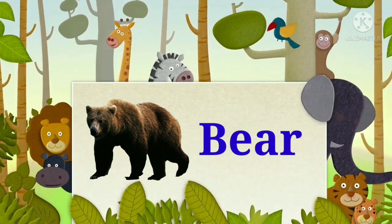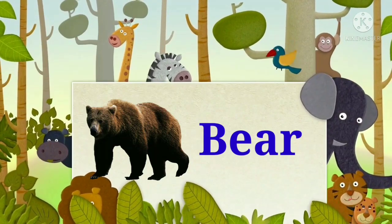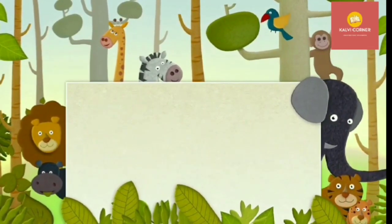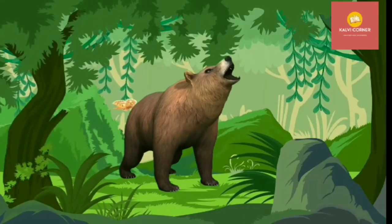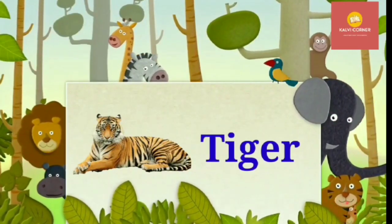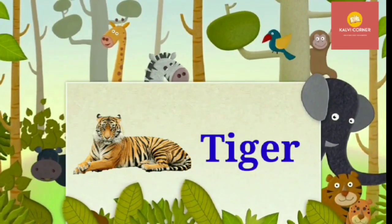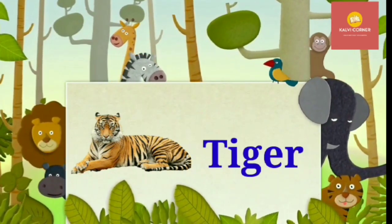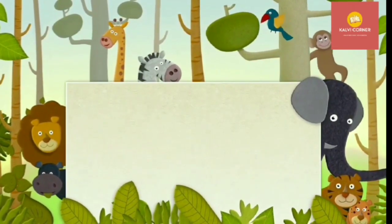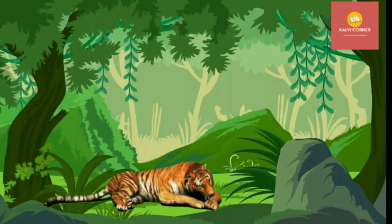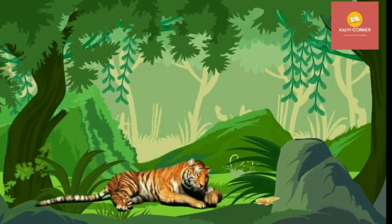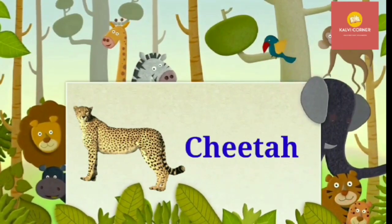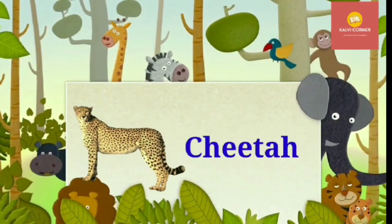Next is bear. Bears are large animals that eat mostly meat and fish. Next is tiger. Tiger is the national animal of India. It is mostly found in dense forests. Tiger is the largest animal in the jungle.